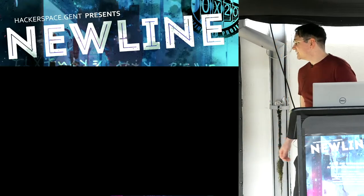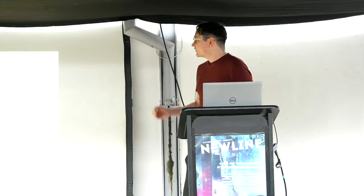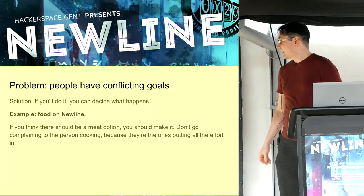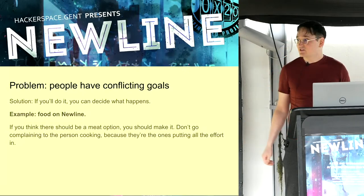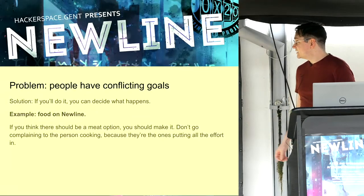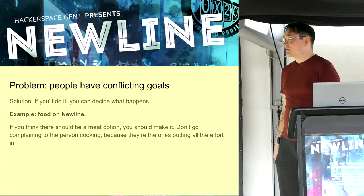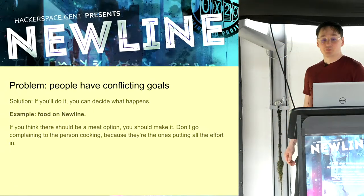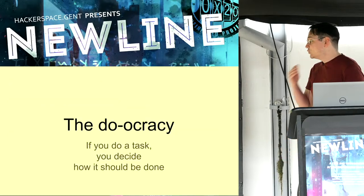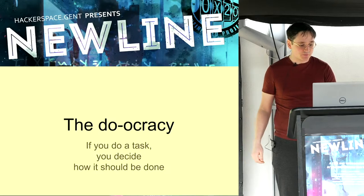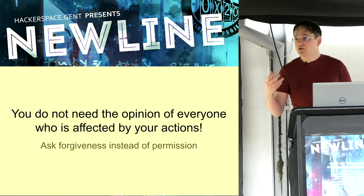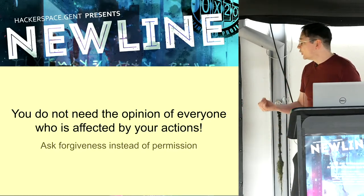It doesn't matter if you're not the person making the food — then you're not the person deciding what people eat. If you want a meat option, just make it yourself. For some reason, every Newline the people who are cooking tend to be vegetarians, so we almost always only have vegetarian options. In a doocracy, if you do a task you decide how it's done. And one very important thing to note: you don't need the opinion of everyone who is affected by your actions.